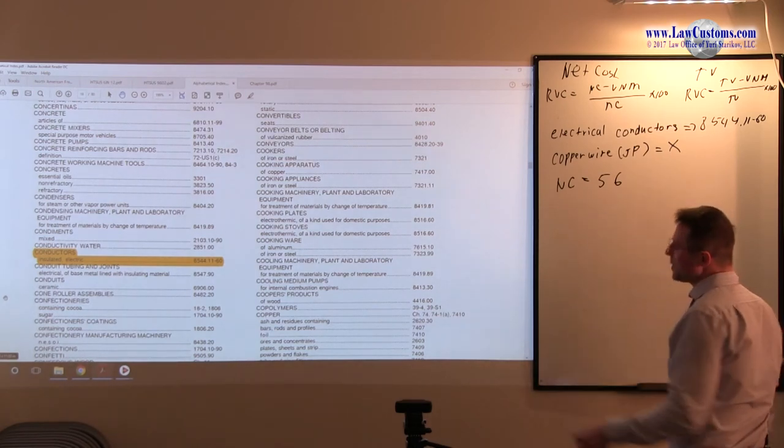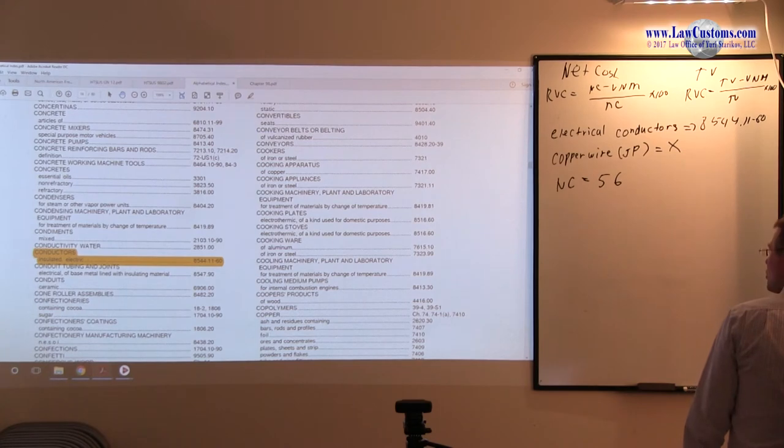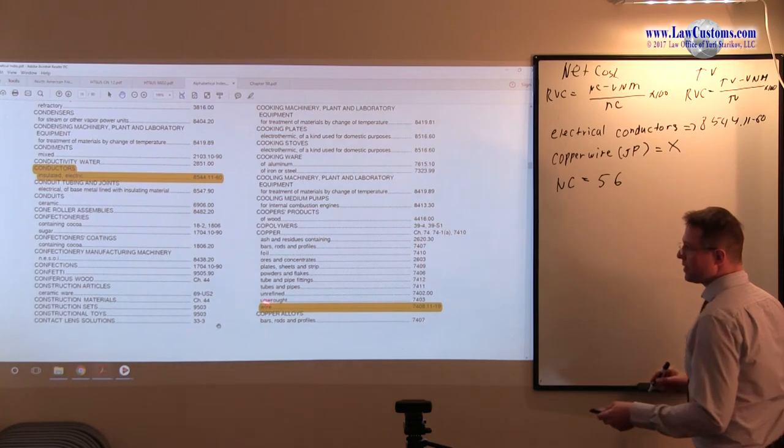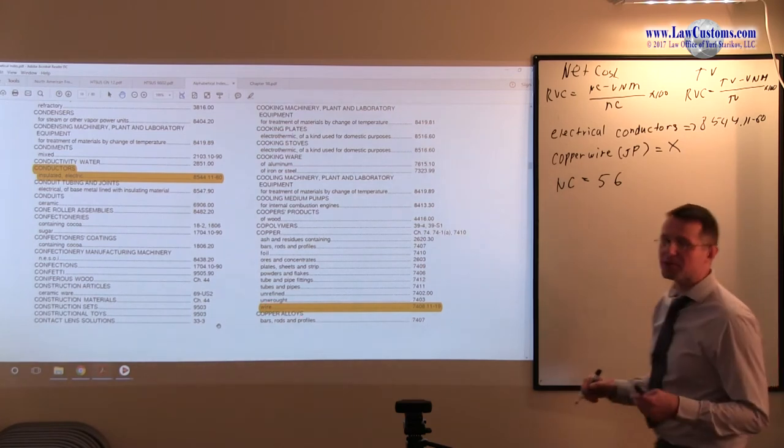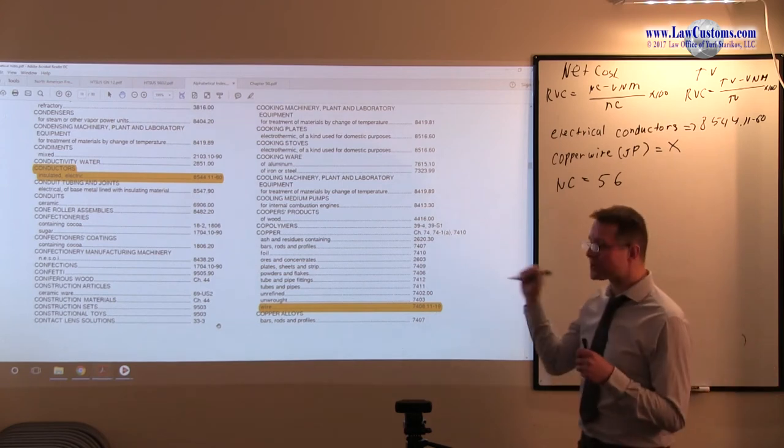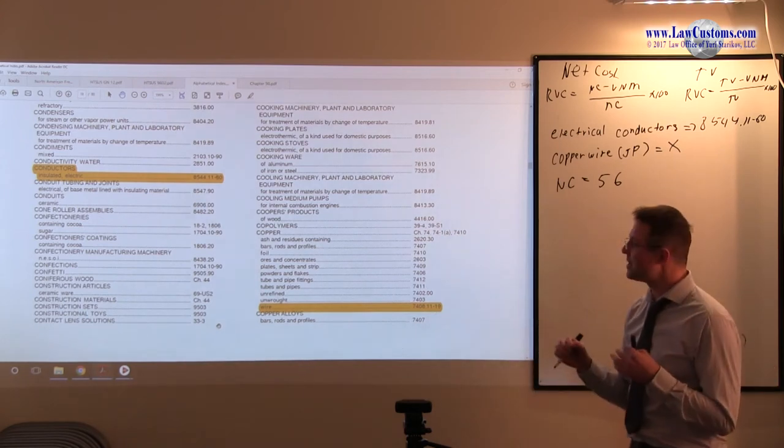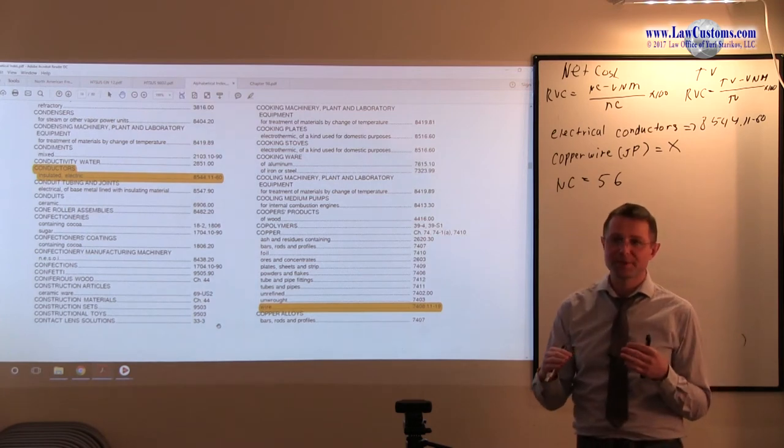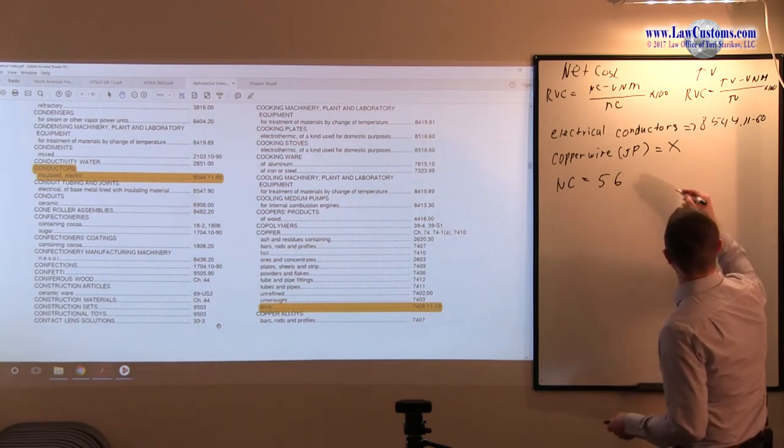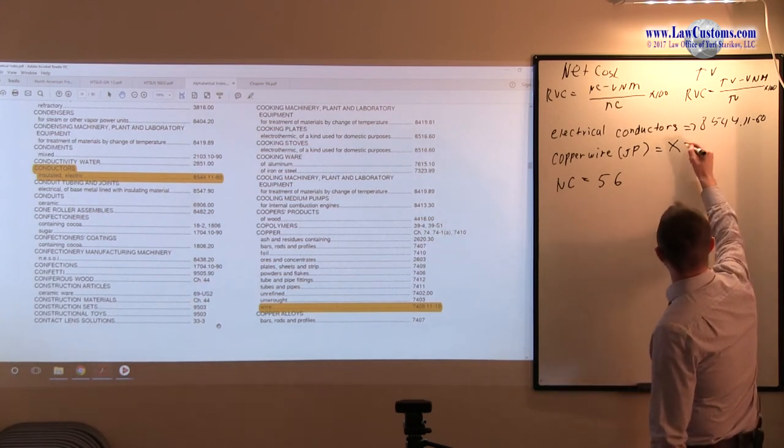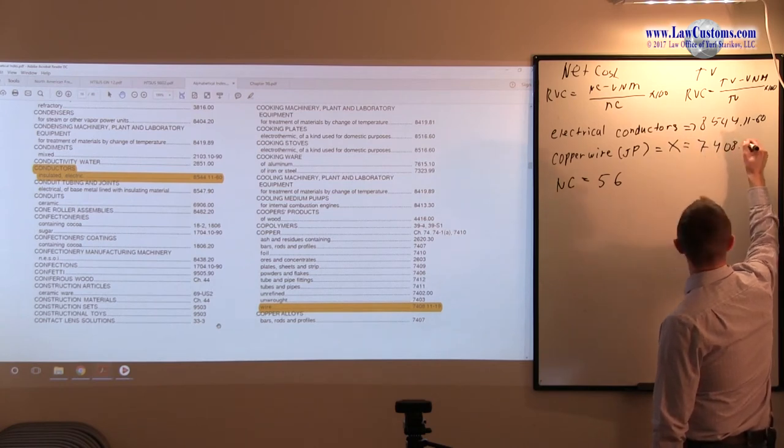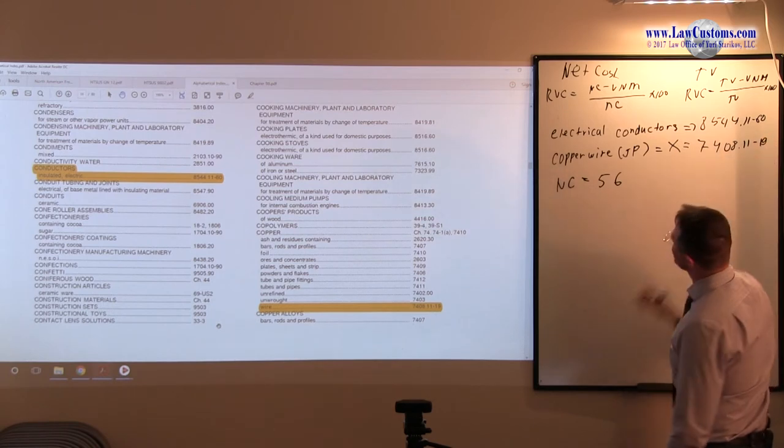Then we have a copper wire. Copper wire is provided under... We are using alphabetical index for the ease of reference. I know this is not legally binding because customers examiners also ask you about the legally binding part, but for the heat of the examination this will do for now. Here copper wire will be classified under 74.08.11.19.